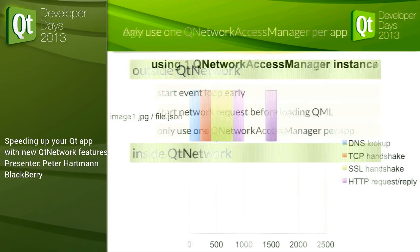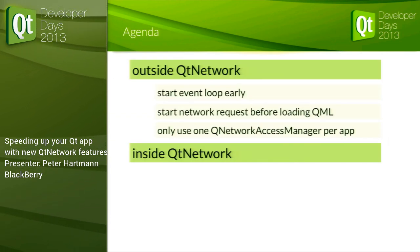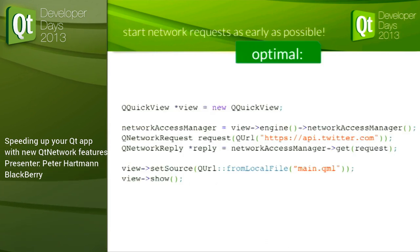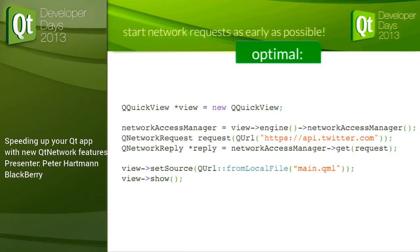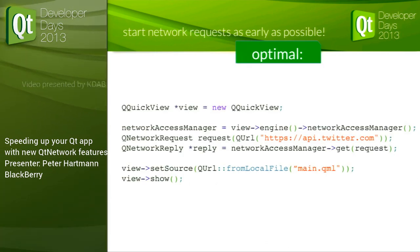To summarize outside QNetwork: the optimal code creates a QQuickView, reuses the QNetworkAccessManager from the QQuickEngine, starts the network request first, and only then loads the QML.